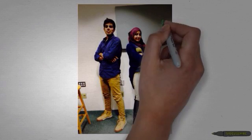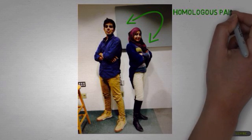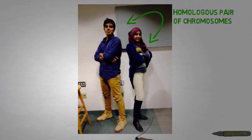Let's consider this analogy. Here are two genetic students, and together they represent a homologous pair of chromosomes. Each chromosome, or each student, has a gene for shoes, but they have a different variation for that same gene.